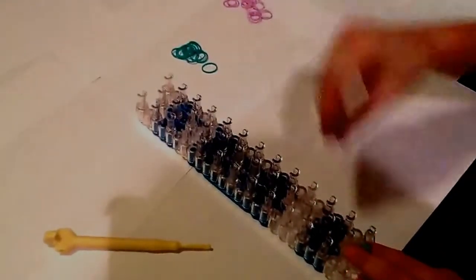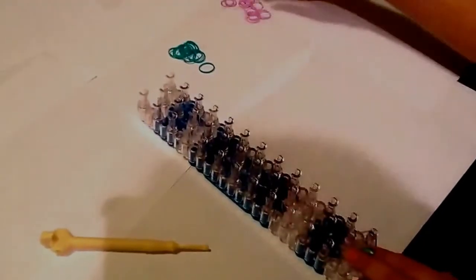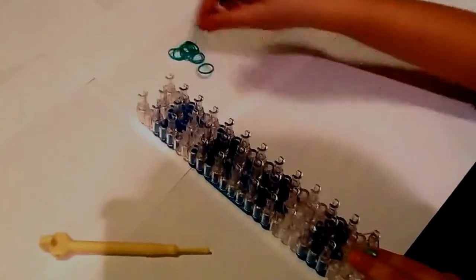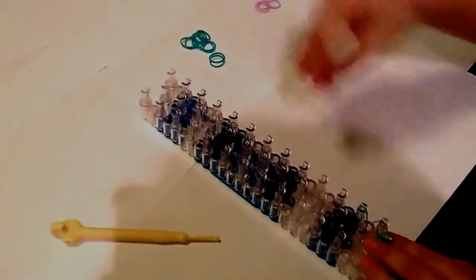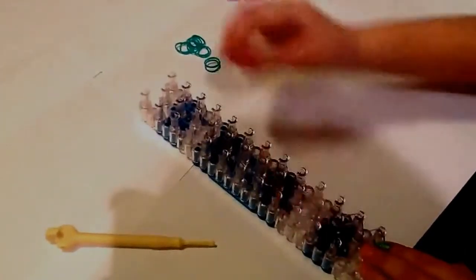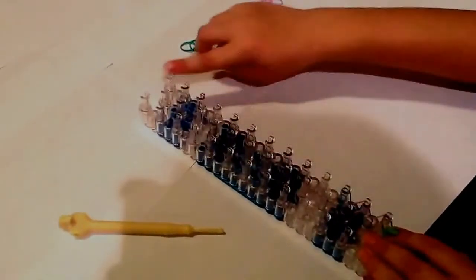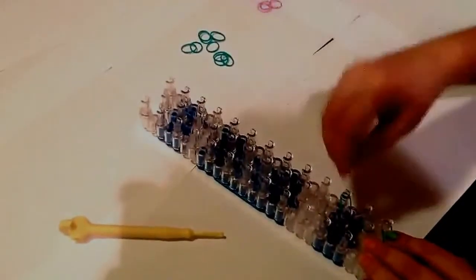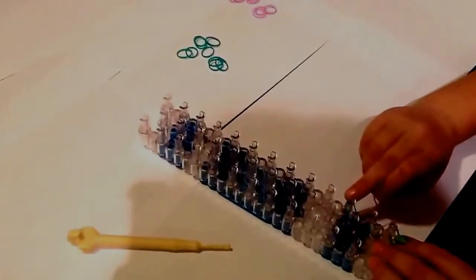Then you take whatever color you're using next. Go from this peg to this peg. Then you go from this peg to this peg. Then you go this peg to this peg. And so on to the end. I'll show you three more times and then we'll stop the video and fast forward.